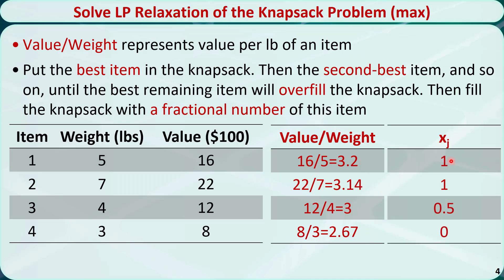First, we will put item 1 in the knapsack. Its weight is 5 pounds. Because the capacity of the knapsack is 14 pounds, it can hold another 9 pounds. Then let's put item 2 in. Now the remaining capacity is 9 minus 7, which is 2 pounds.